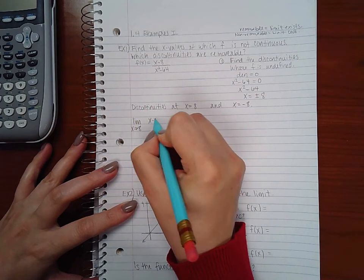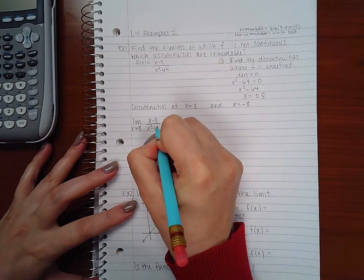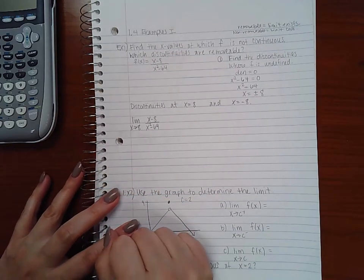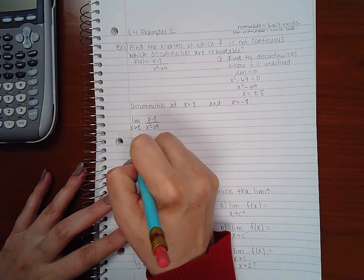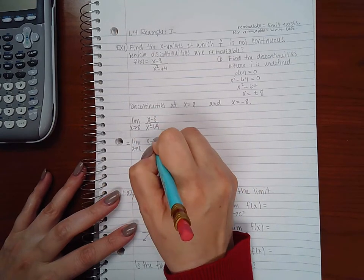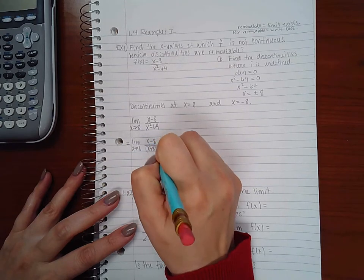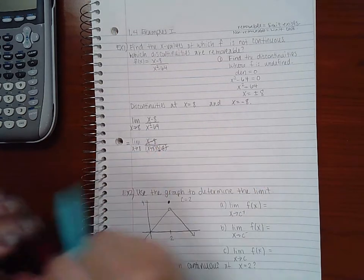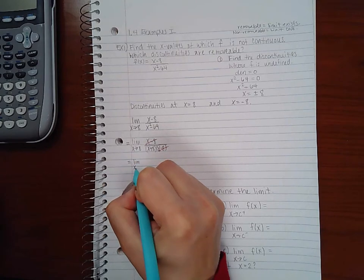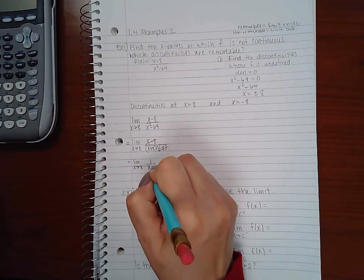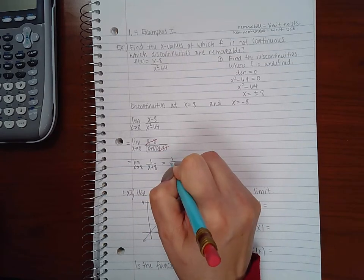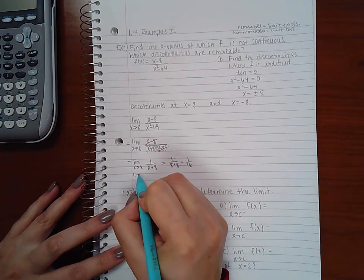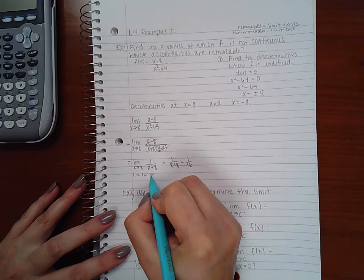First we're going to start with 8. So we're going to find the limit as x approaches 8 of our function. Now we cannot do direct substitution because we would get 0 over 0 which is an indeterminate form, therefore we do have to algebraically manipulate it first. So I'm going to factor the denominator into x plus 8 and x minus 8, and then we notice that this will cancel with this factor, leaving us with 1 over x plus 8.